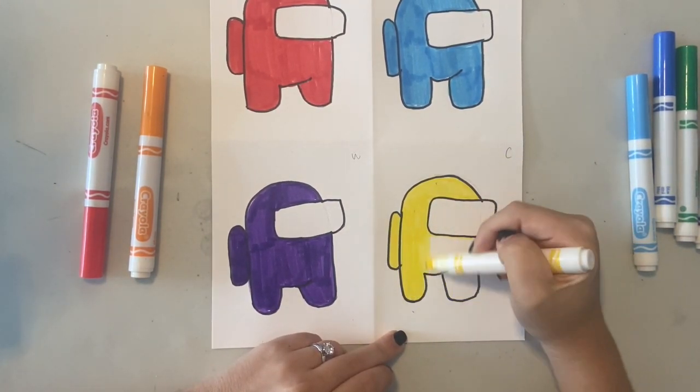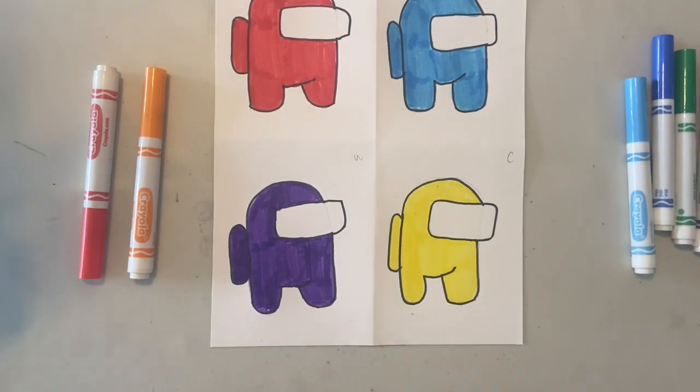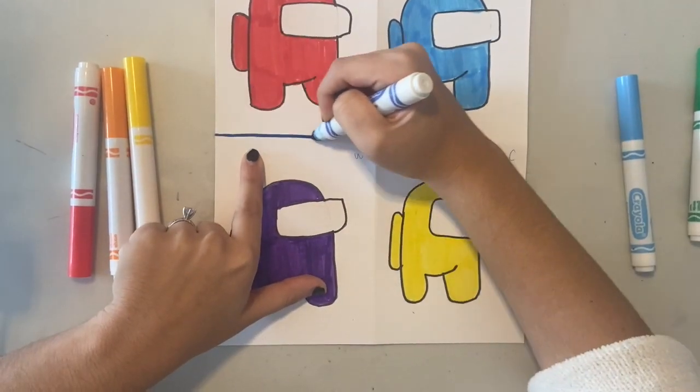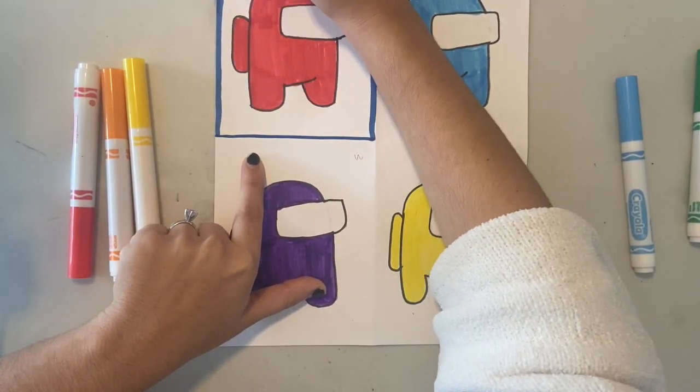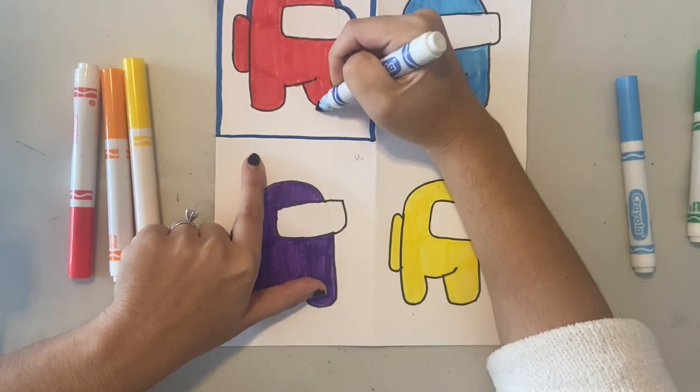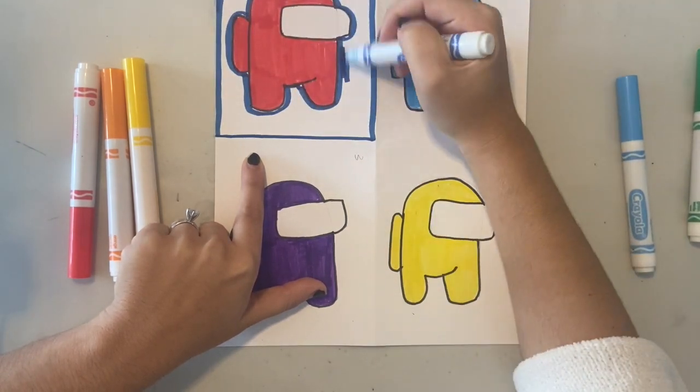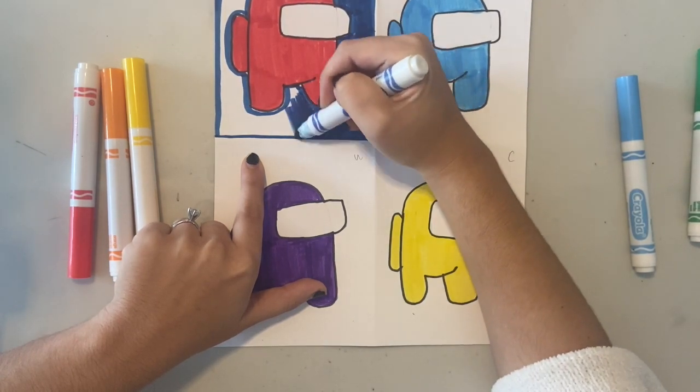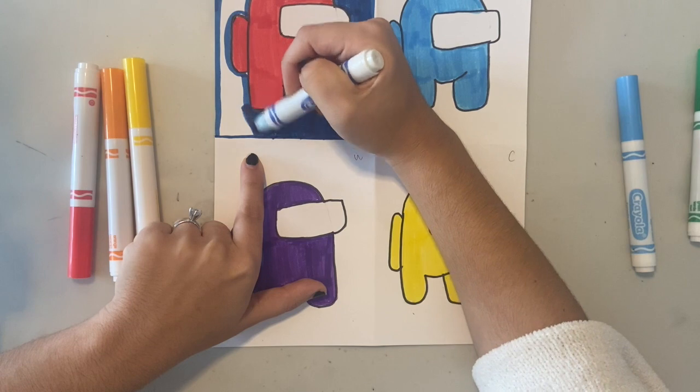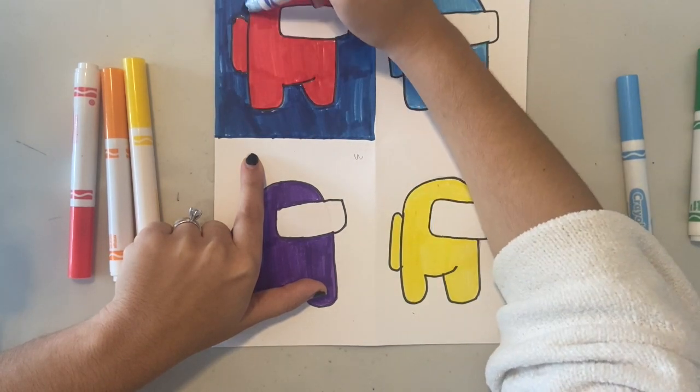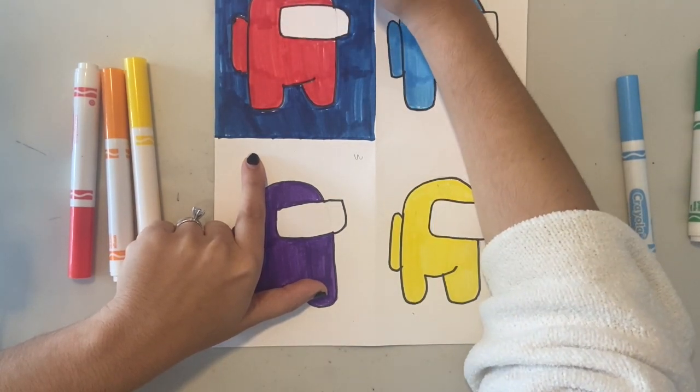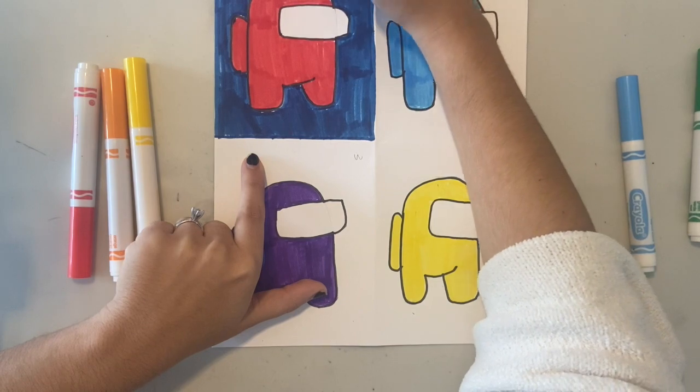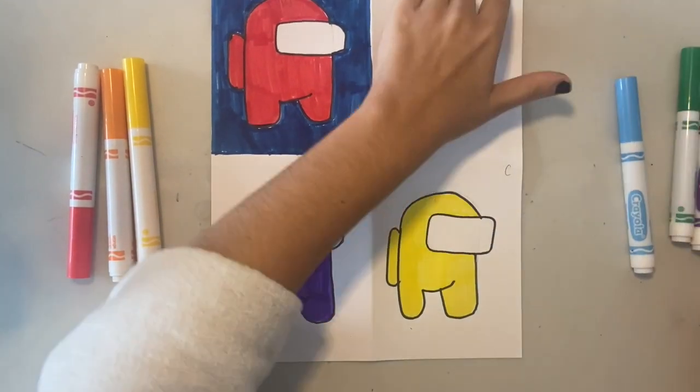The background of each character should be the opposite of your Among Us character. So if you chose a warm color, the background should be cool. If you chose a cool color, the background should be warm. Since my red Among Us character is a warm color, I'm choosing the opposite, a cool color blue for my background. I could have also chosen green or purple, as long as it's a cool color.